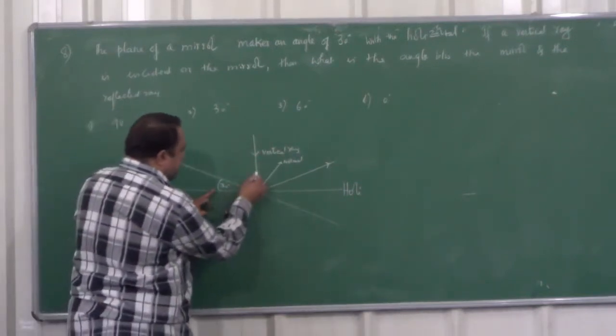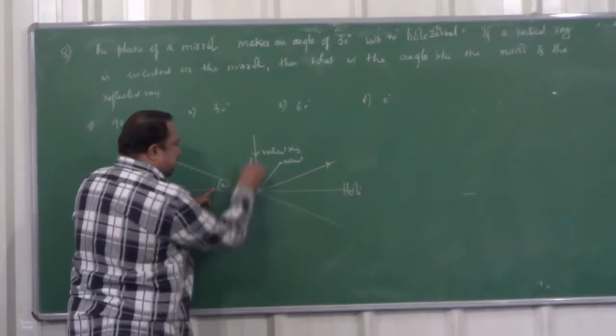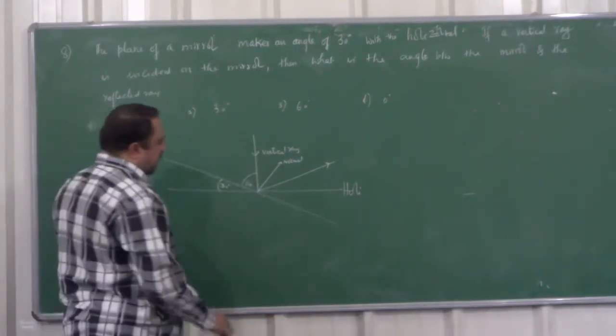Now, if this is 30 degrees, then what is this? 60 degrees. Because it's 60.